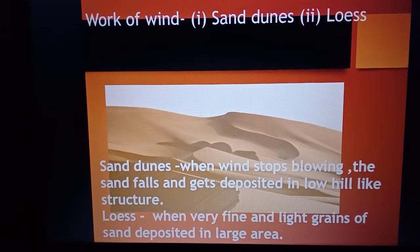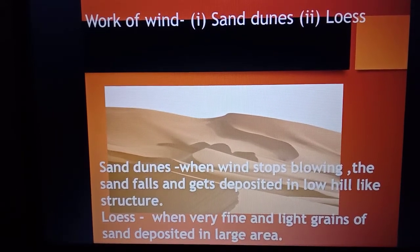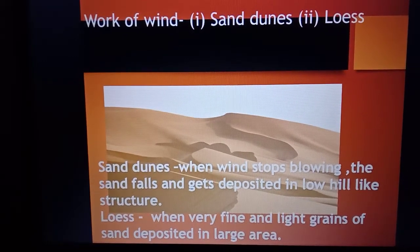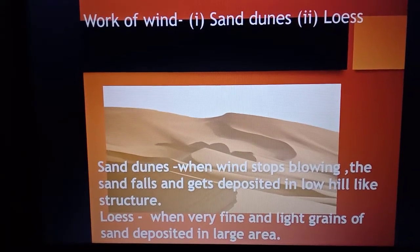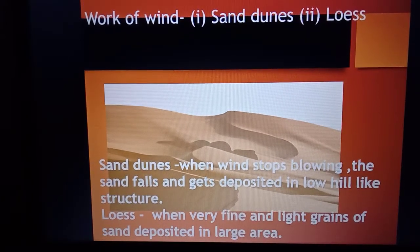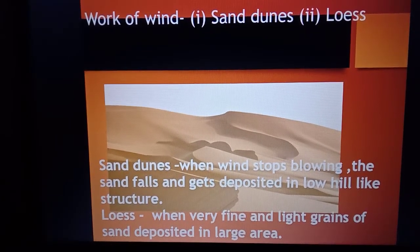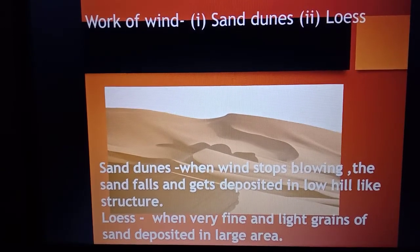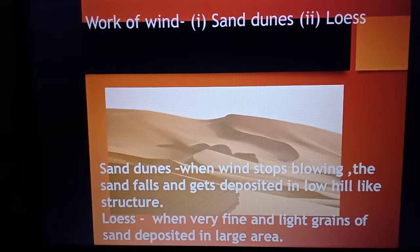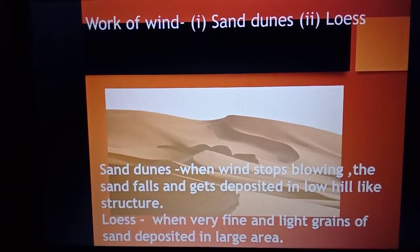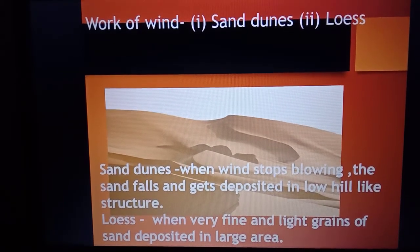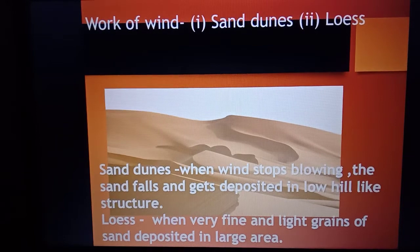People used to lose their way in deserts in ancient times because of shifting sand dunes. Nomads used sand dunes to determine direction since they had no compass, but there is no problem now due to technological development. When sand is deposited over a large area, it is known as loess. Large deposits of loess are found in China. Loess is a bigger feature in comparison to sand dunes. That's all for today. Thank you.